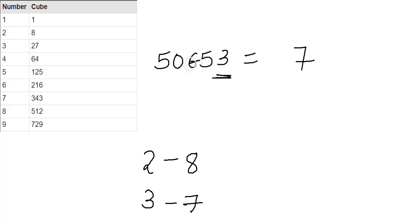Then what we do is we strike off the last 3 numbers which is 653 and then what we are left with is 50. Then we find a number which is lesser than 50 and is a perfect cube which as you can see here is 27 and the cube root of 27 is 3.